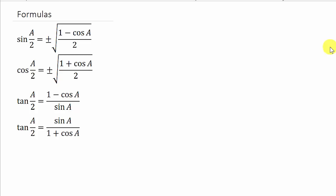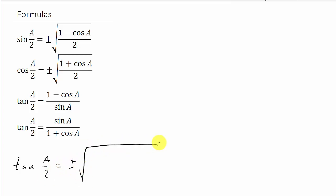In this video we're going to look at finding the exact value of a trig function using a half-angle identity. Here are the formulas for the half-angle identities: the half-angle identity for sine, cosine, and notice there are two of them for tangent. There's actually another one for tangent: tangent of A over 2 equals plus or minus the square root of 1 minus cosine A over 1 plus cosine A. Which one do you use? It really doesn't matter — you can use any of them and they'll all give you the correct answer.